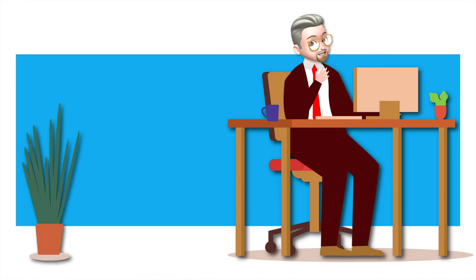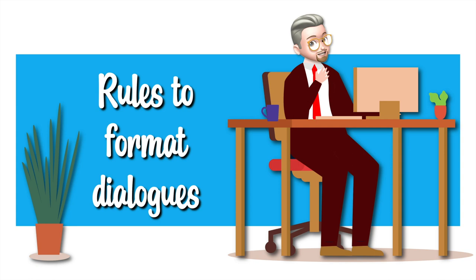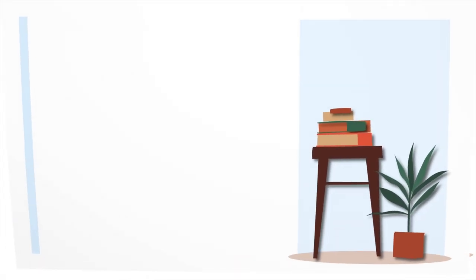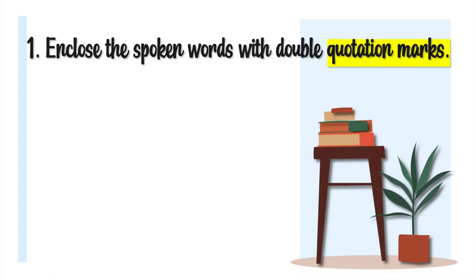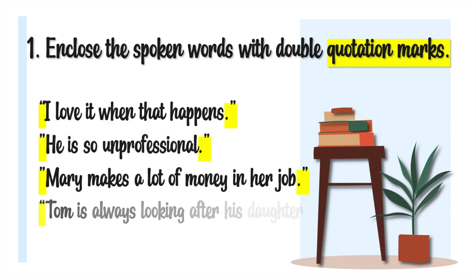Now we're going to look at the rules to format dialogues. Rule number one: Enclose the spoken words with double quotation marks. Like in these examples: "I love it when that happens." "He is so unprofessional." "Mary makes a lot of money in her job." "Tom is always looking after his daughter." Notice how the period goes before the quotation marks. The quotation marks are highlighted in yellow.